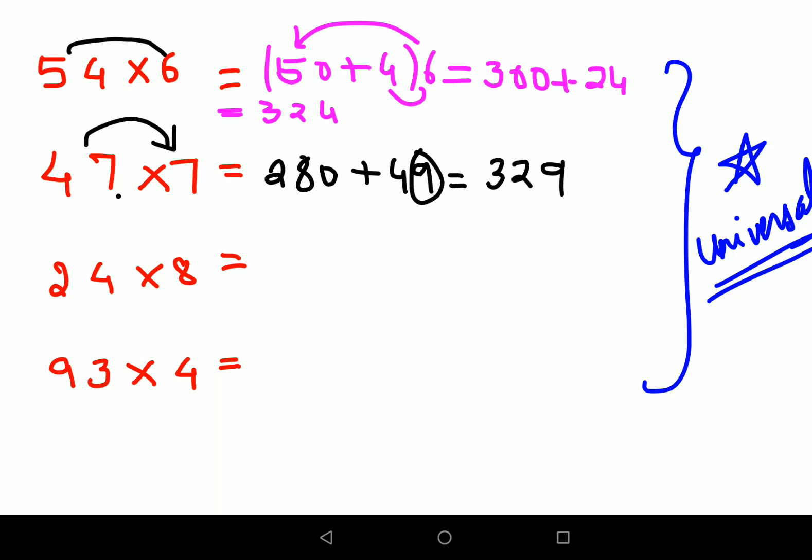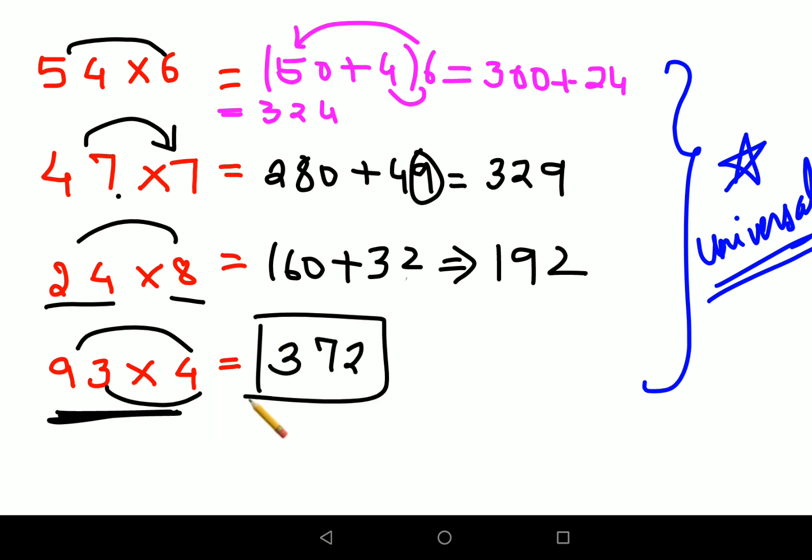Next what happens is 24 into 8. So first we'll do 20 into 8 gets you 160 plus 4 into 8 that gets you 32. So that gets you finally 192. Now this one I'm doing literally in my mind. So 4 into 90 gets you 360 and 4 into 3 gets you 12. So 360 plus 12 gets you 372. You saw how easily I could do this.